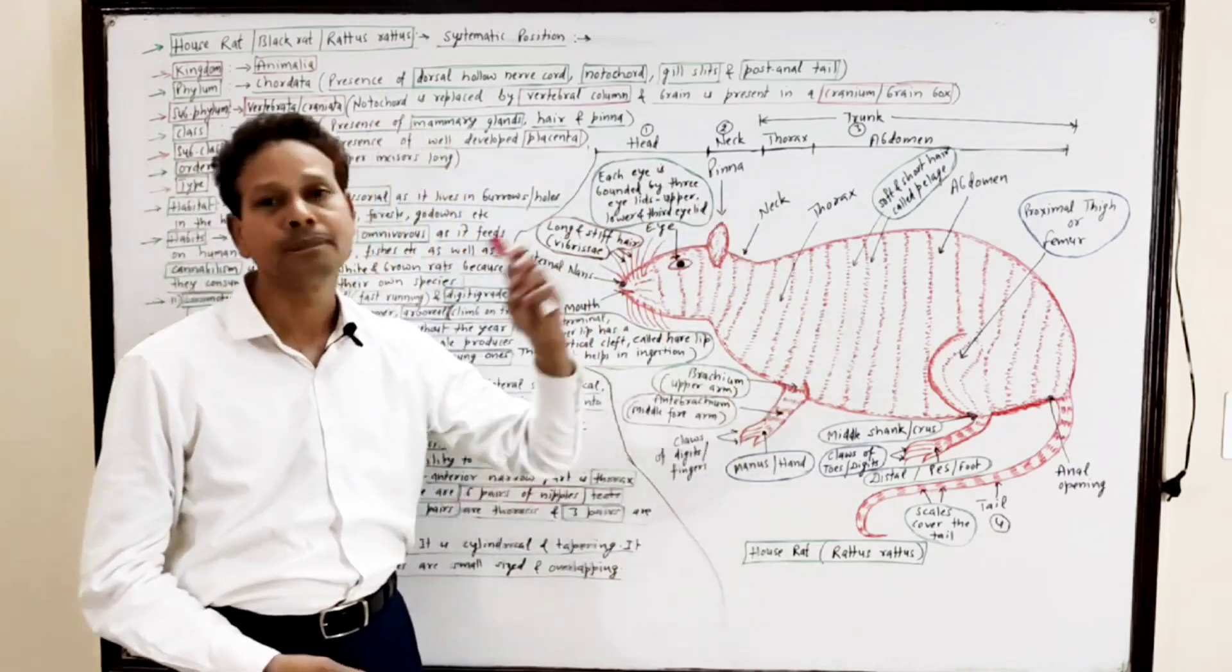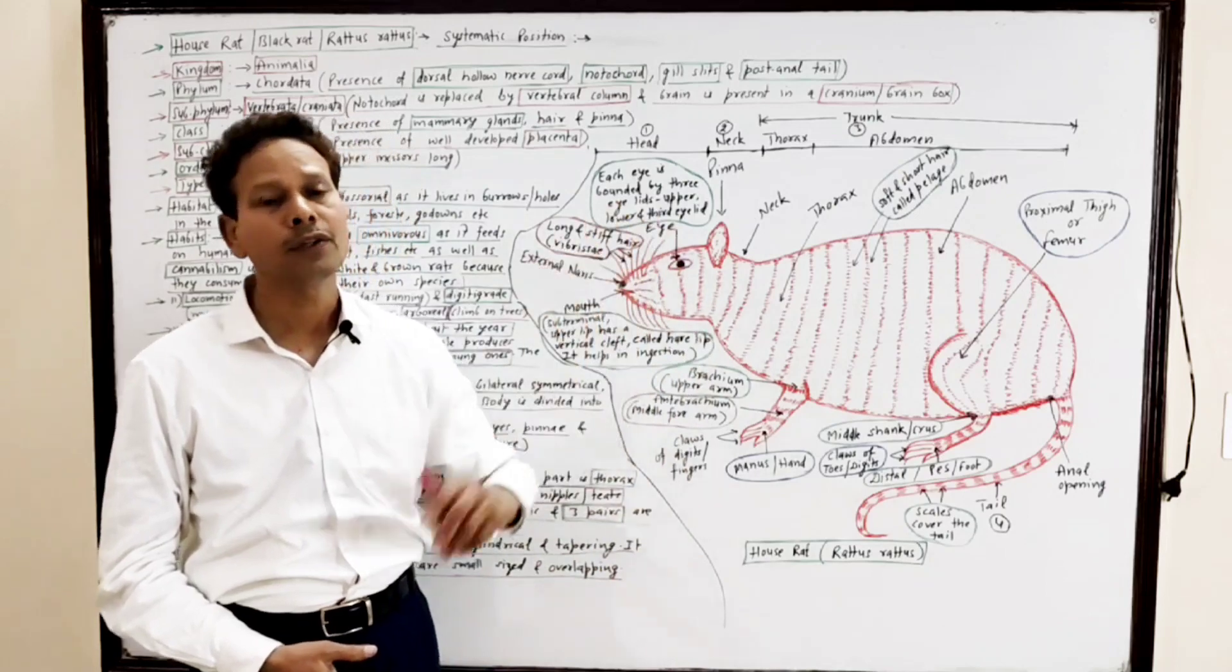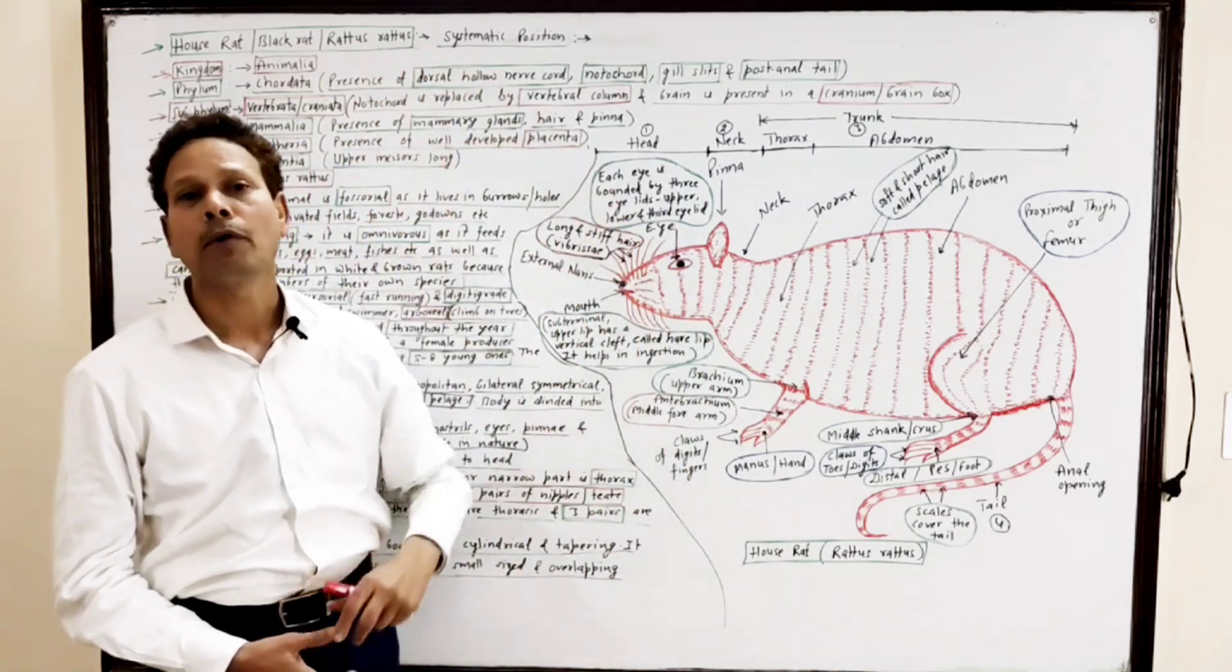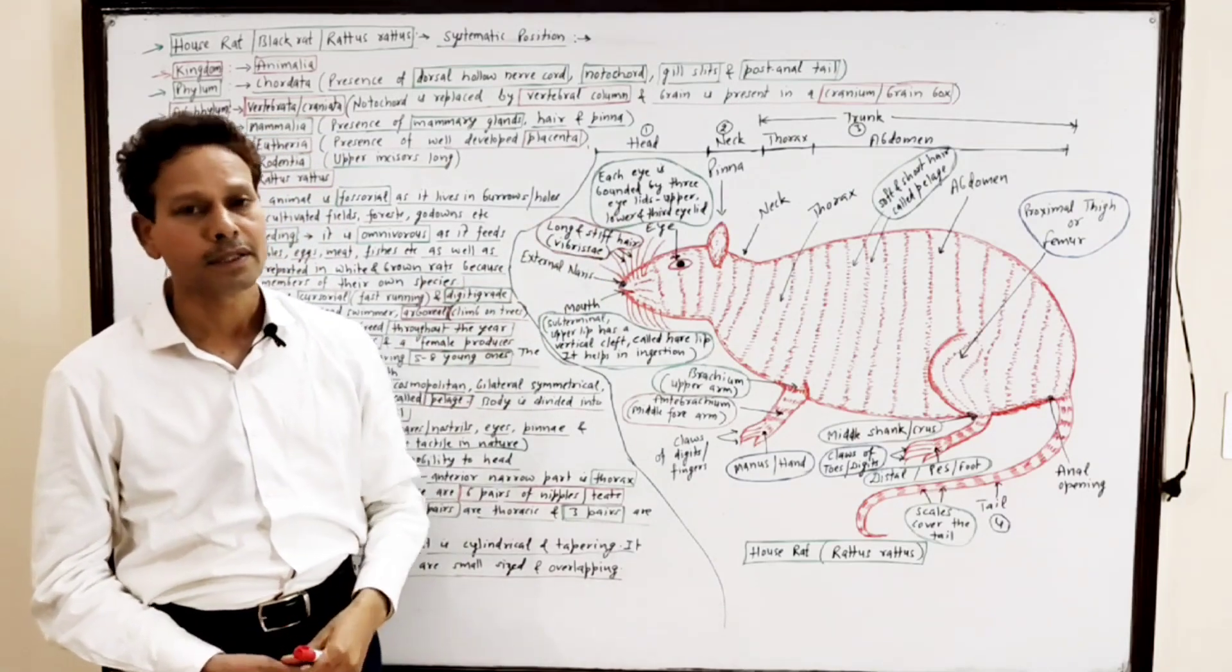This is about external morphology, general characters, and systematic position of black rat, house rat, Rattus rattus.